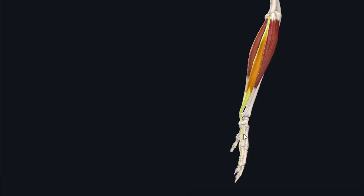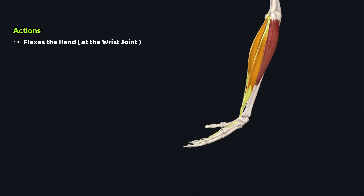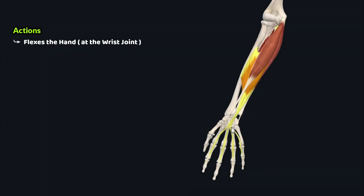The palmaris longus muscle performs an important action: it flexes the hand at the wrist joint, also called the radiocarpal joint. Along with flexion of the hand at the wrist, the palmaris longus muscle also stabilizes the palmar aponeurosis, which is not shown in this model.